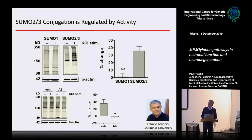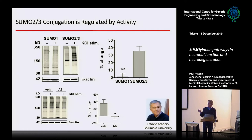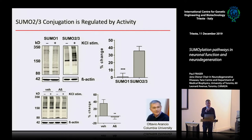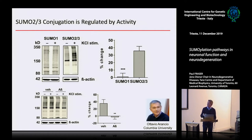Otavio's lab was interested in basic neurobiology — he's an electrophysiologist focused on learning and memory. What they found was when they stimulated hippocampal slices, either by tetanus or potassium chloride to invoke LTP, they saw a very specific increase in SUMO2 but no change in SUMO1. Otavio also works in the Alzheimer's world, and when they added amyloid beta to these hippocampal slices, you lose this increase in SUMO2, suggesting that one potential link to the mechanism of A-beta is an impairment in SUMO2 that's necessary for normal LTP.